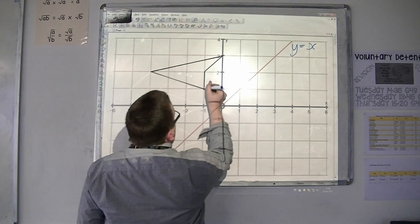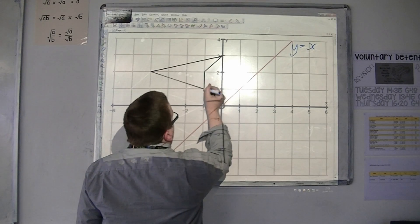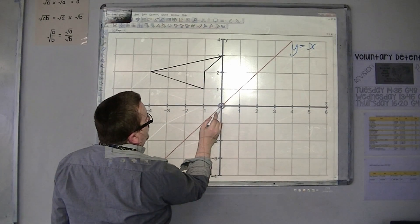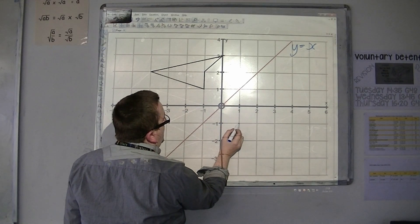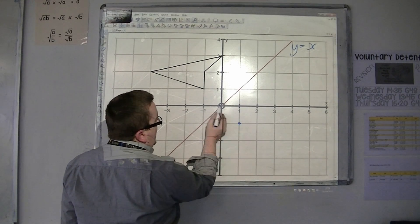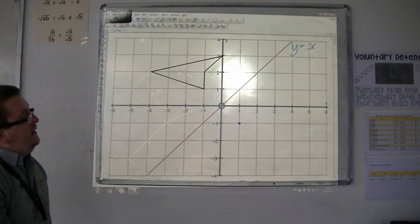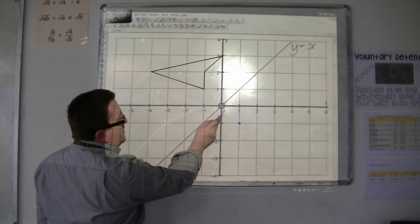So if I take this point, for example, it is one diagonal away from the mirror line, so its reflection should also be one diagonal away from the mirror line. So it should be the same distance away.